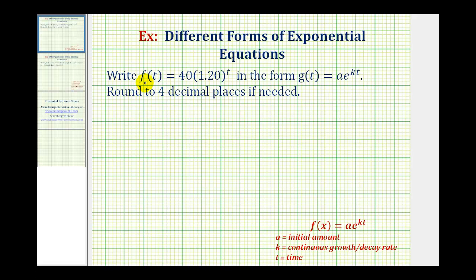We want to write the exponential function f(t) = 40(1.20)^t in the form g(t) = ae^(kt).